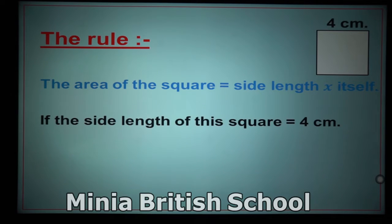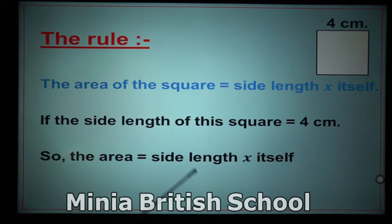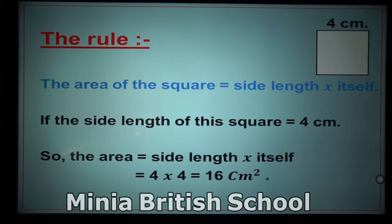The first step is to write the rule — don't forget the rule. The rule says: the area equals side length times itself. Then substitute: the side length equals 4, so I write 4 times 4 equals 16 square centimeters.